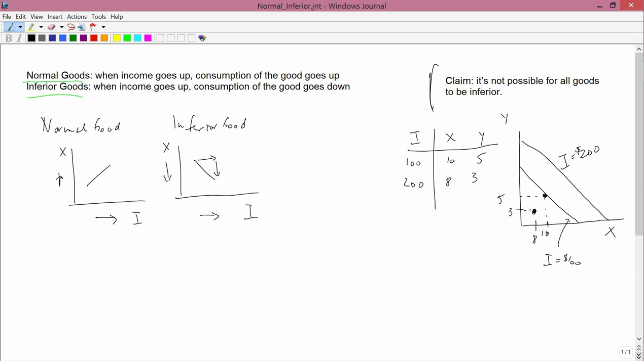Now, when your income goes up to 200, your preferences switch. In other words, you can still consume both 10, 5 and 8, 3, but now you chose 8, 3. That's an inconsistency. It means that preferences have changed, and that violates the basic neoclassical assumptions that we're using. That doesn't mean that in reality those preferences never change. It just means that in our neoclassical economic theory, at least at this point, preferences don't change. And therefore, this inconsistency can't happen.